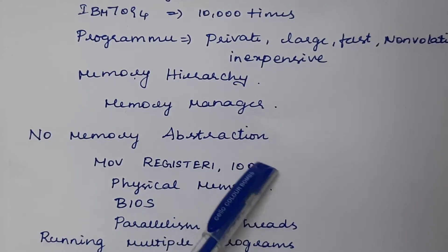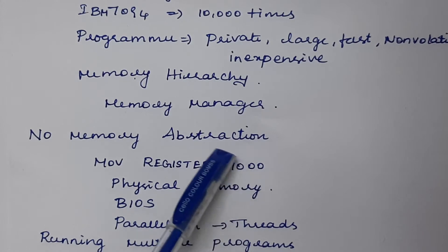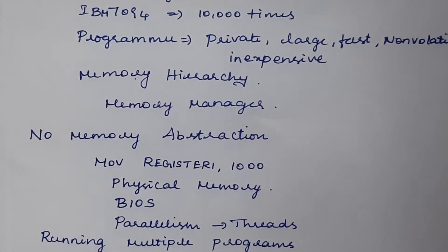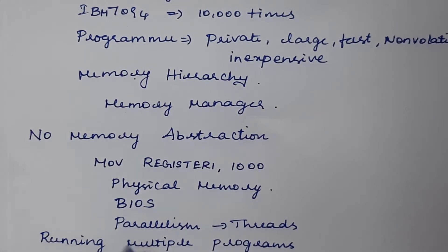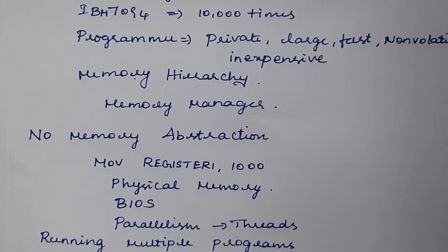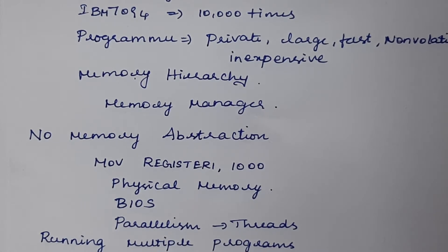The MOVE instruction moves content from a memory location — say address 1000 — into a register, using only physical addresses. Users could access physical memory directly, but this leads to problems: a user program might corrupt the operating system or other users' programs. To avoid this, we move to memory references like relative addresses, dynamic loading, dynamic linking, and relocation.